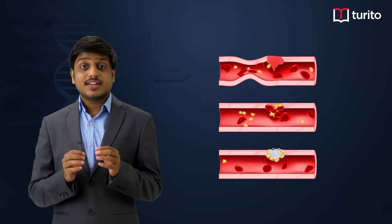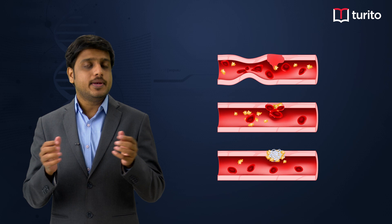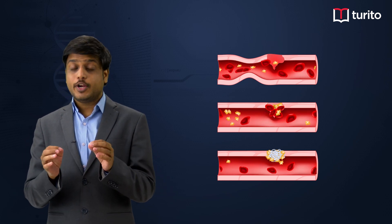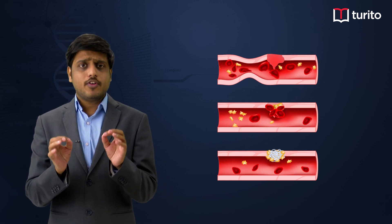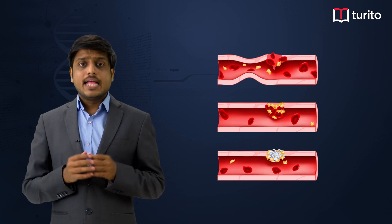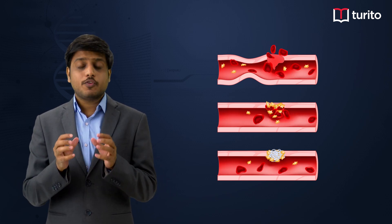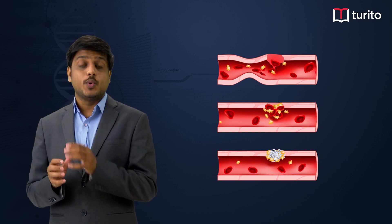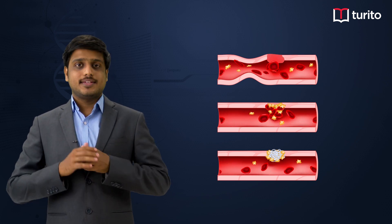Hello students, let us understand blood coagulation. Whenever there is an injury to the blood vessel, the blood starts bleeding, and in a healthy individual the bleeding stops within a very short time. This cessation of bleeding within a short time is called blood coagulation or blood clotting. In the absence of blood coagulation, blood leaks out in a huge amount and this blood loss can even lead to death, so blood coagulation is a very important property of blood.